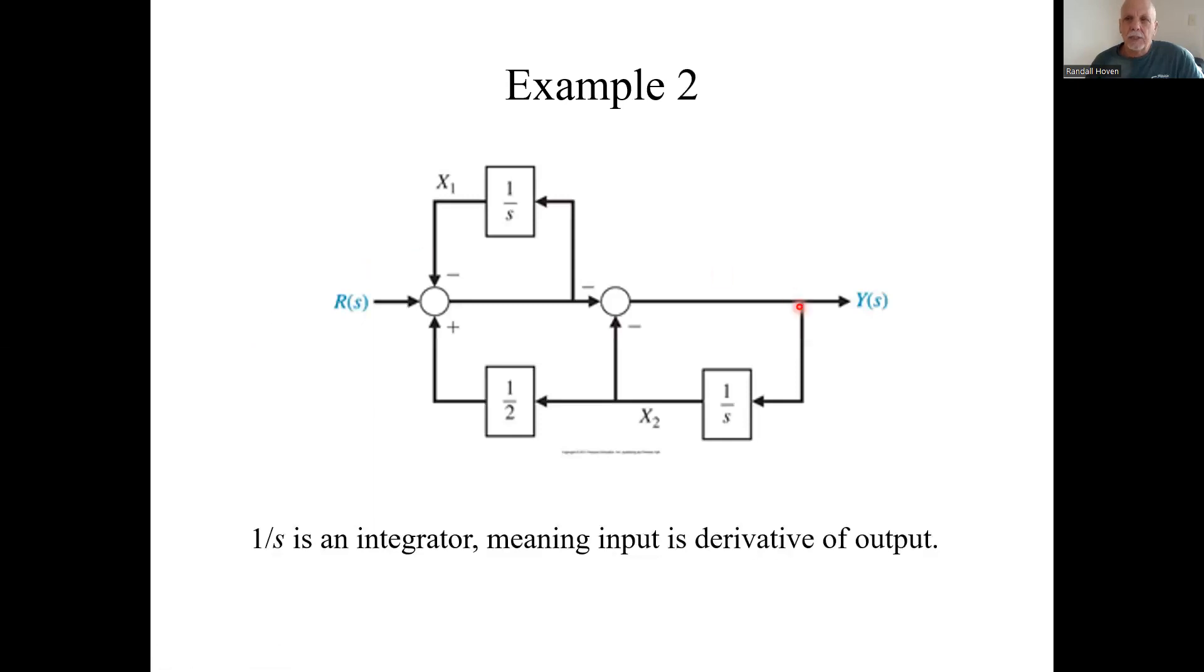Another case: let's say you started with a block diagram that consisted only of these coefficient multipliers and integrators. 1 over s is integration, remember that. Well, you could define your state variables as the output of each integrator. I'll say this is my x₁ variable, this is my x₂ variable. That means the inputs to those integrators are the associated derivatives of those state variables.